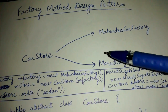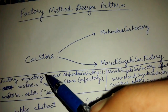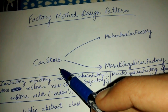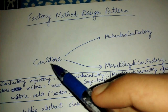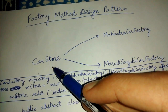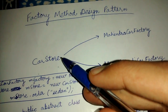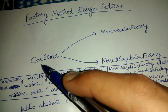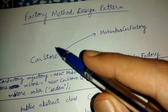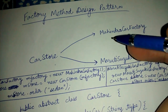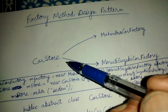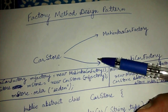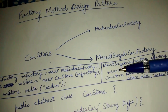We have a car store, and corresponding to that store we had a car factory to create our cars. Other than the creation of car objects, the welding, painting, etc., we did in the car store. The varying part we separated out into a car factory. But now let's say we have two different factories — one is Mahindra car factory and one is Maruti Suzuki car factory.